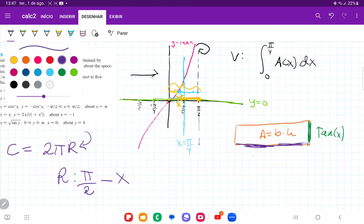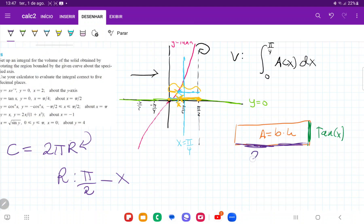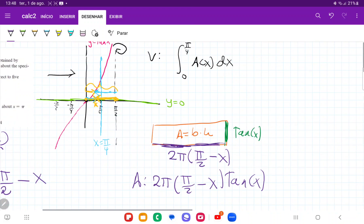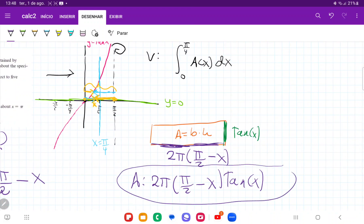So once we have this, we can see that the base is going to be 2 pi times the radius, which is pi over 2 minus x. And so the area is equal to base times height, so that's 2 pi times (pi over 2 minus x) times tan x. So once we have this expression for our area, this is just wherever we're at on our x-axis. If we plug the value of x into these expressions, it is just going to give us the area of the cylinder that wraps around at a certain point.